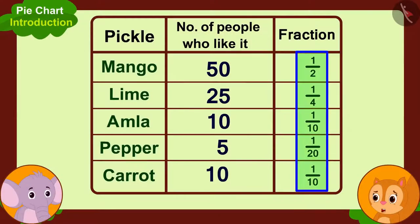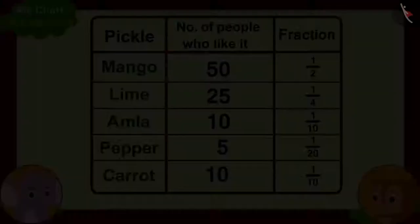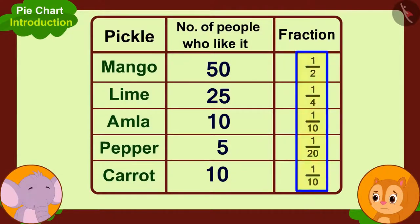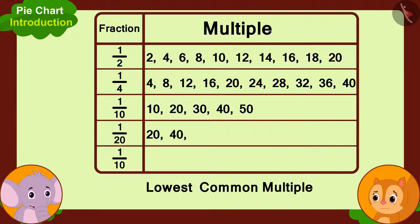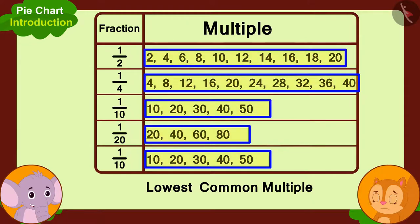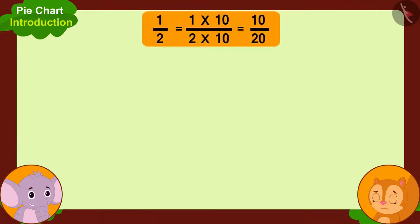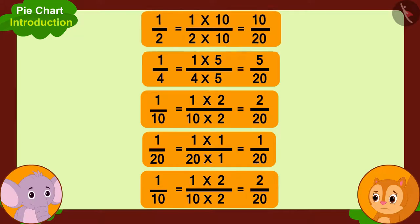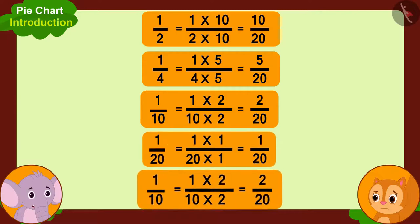But the total number of parts in all these fractions is different. Then, how do we represent them? To solve this, we will first find the lowest common multiple — the smallest common multiple — of the total parts of all these fractions. In this way, 20 is the lowest common multiple of these numbers. Now, we will write all these fractions in such a way that the total parts of all of these fractions is 20.